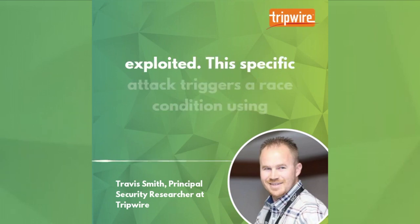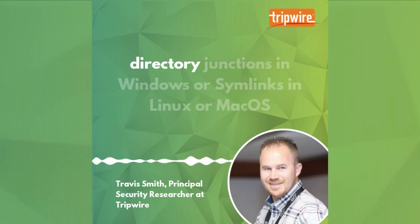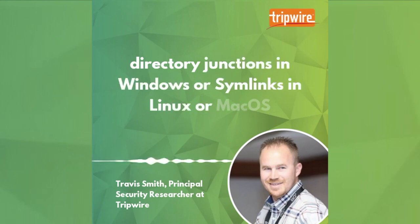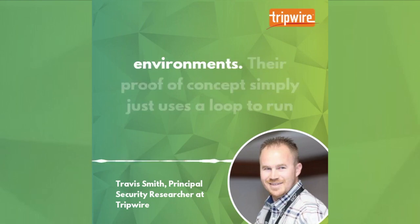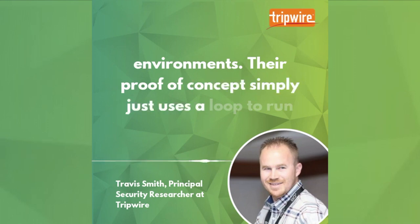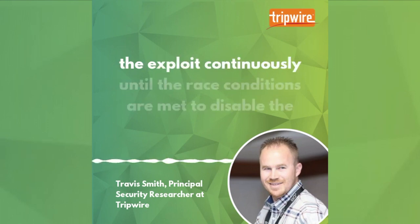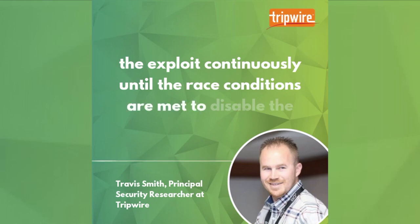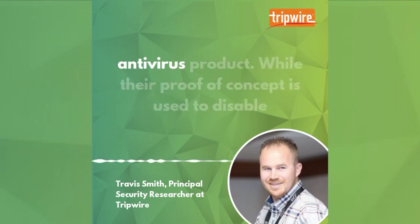This specific attack triggers a race condition using directory junctions in Windows or symlinks in Linux or macOS environments. Their proof of concept simply uses a loop to run the exploit continuously until the race conditions are met to disable the antivirus product.